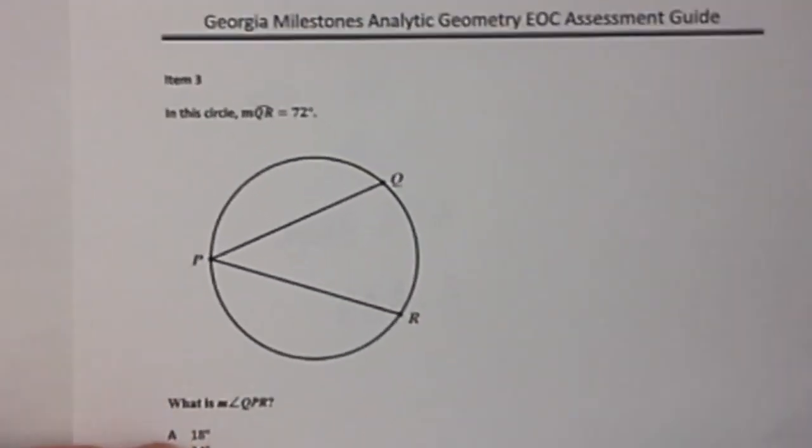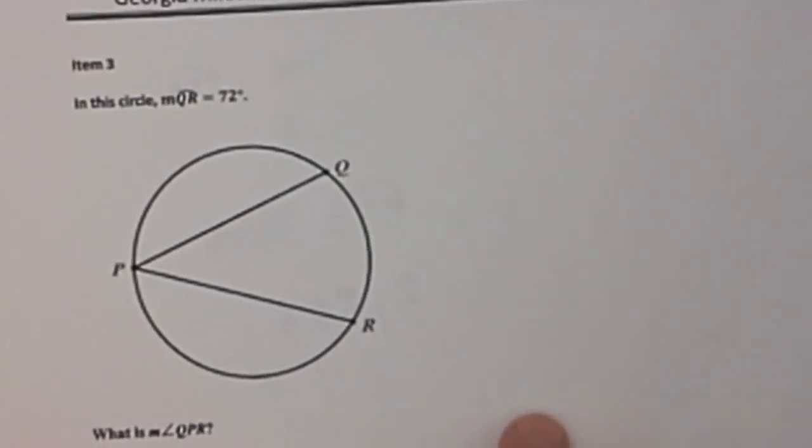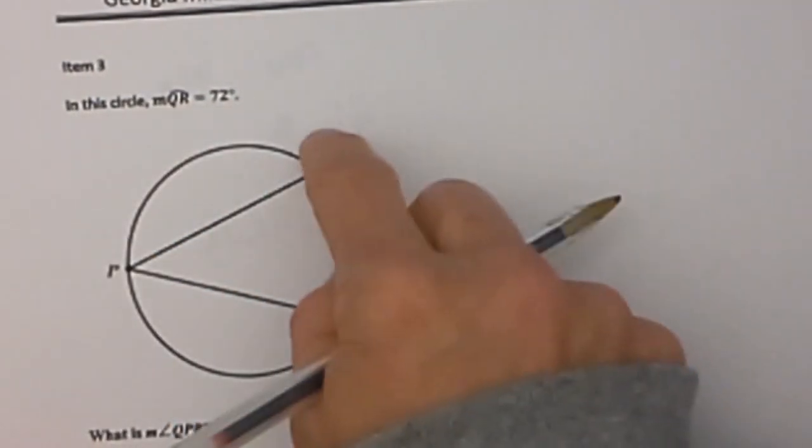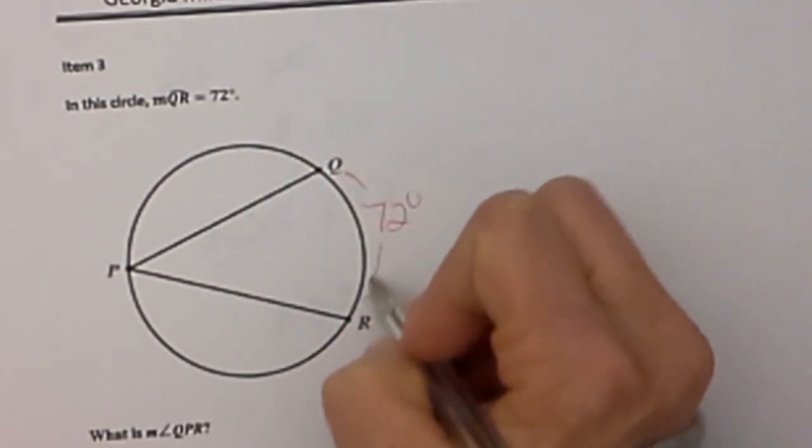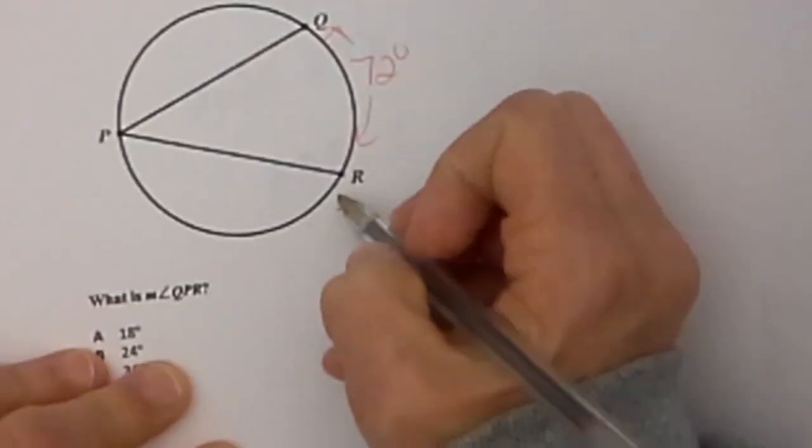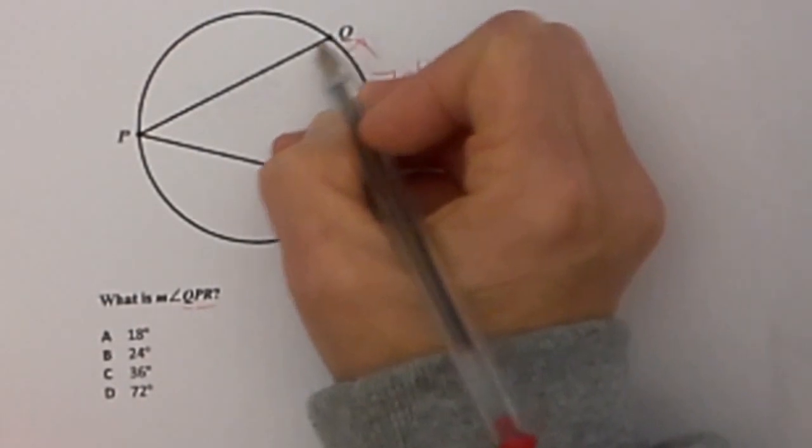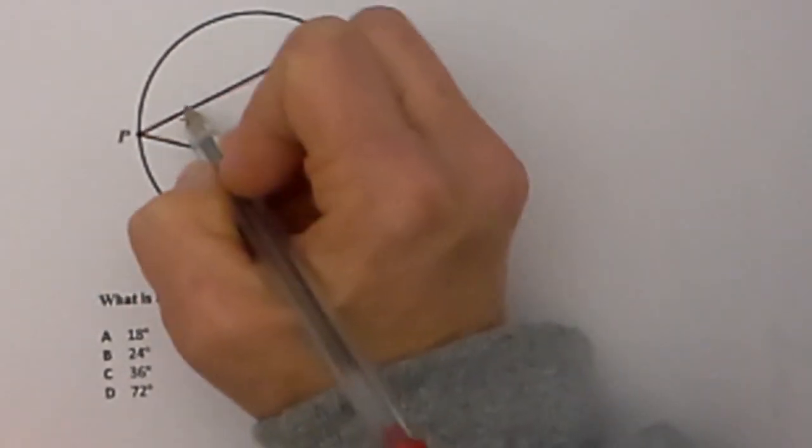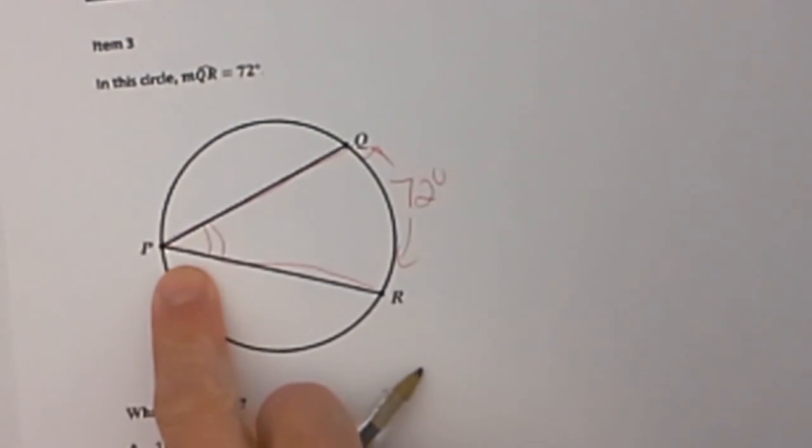Problem 3 is a circle problem. This one is actually really easy. You've got the measure of arc QR. I am going to label my diagram. That is 72 degrees. And we are asked to find the measure of angle QPR. So that is Q to P to R. So I want to know what this angle is.